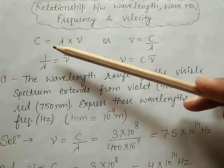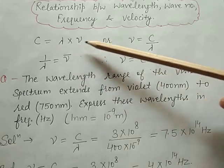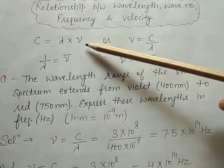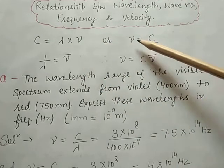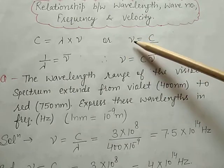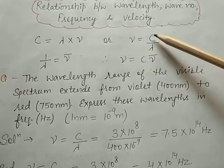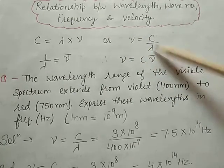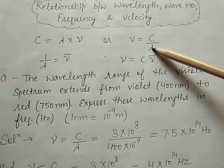The formula is C is equal to lambda multiplied by mu. From this we can calculate mu, that is frequency. Frequency is equal to C divided by lambda, where C is the velocity and lambda is the wavelength.